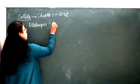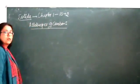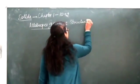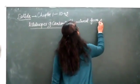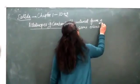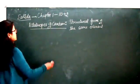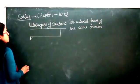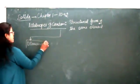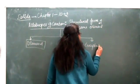Now let's look at the allotropes of carbon. By allotropes we mean two different structural forms of the same element. We are going to discuss two allotropes of carbon — the first one is diamond and the second one is graphite.